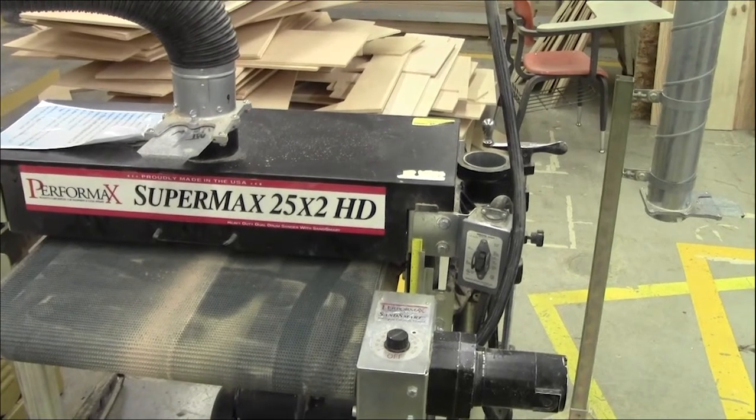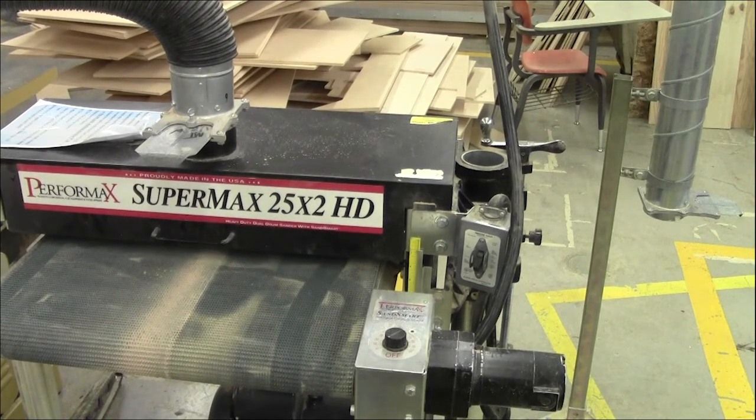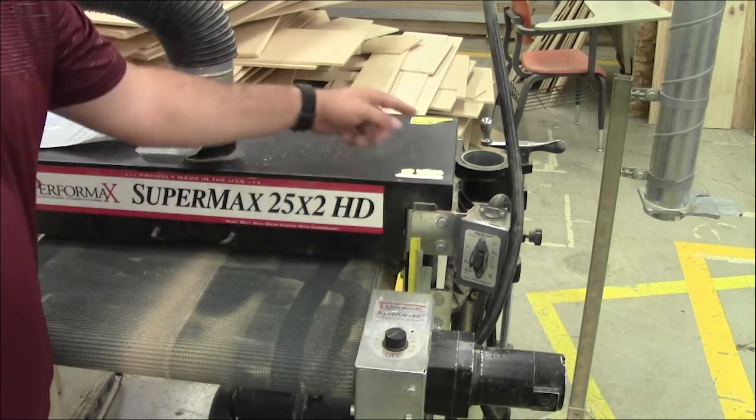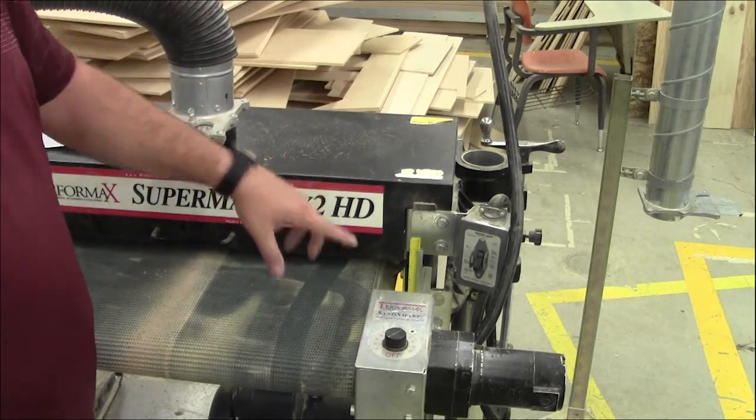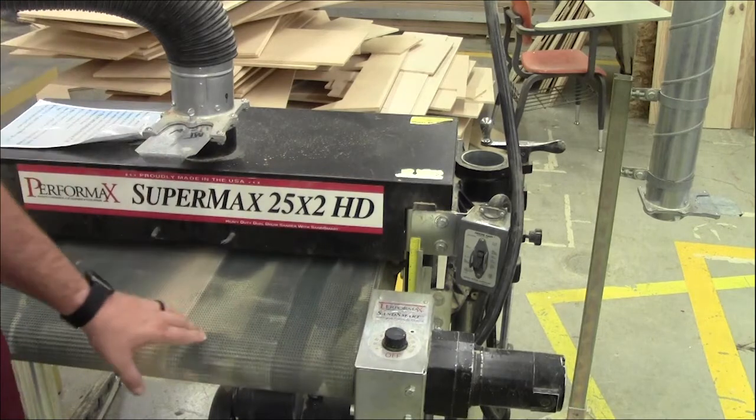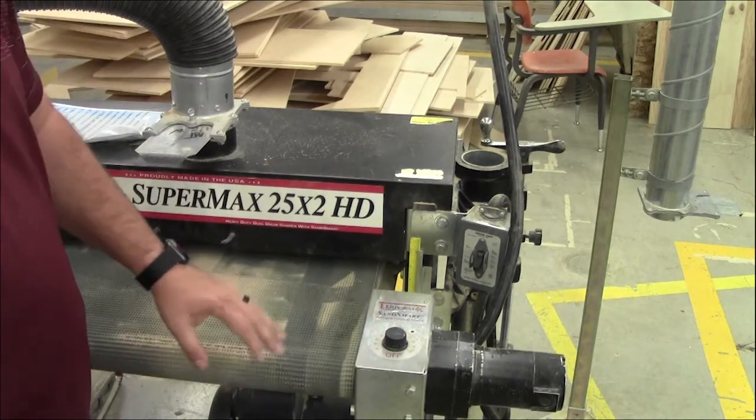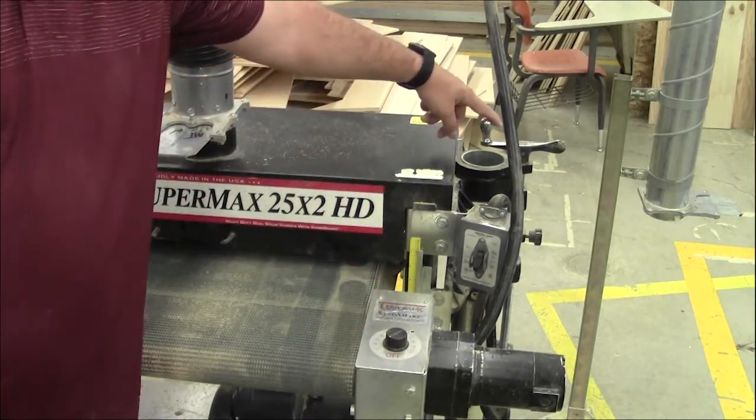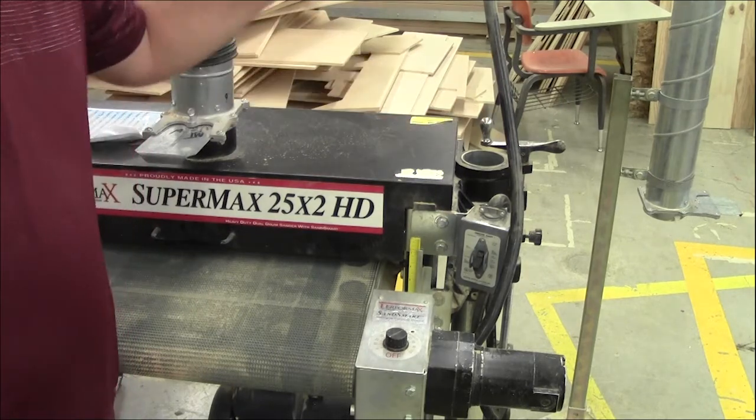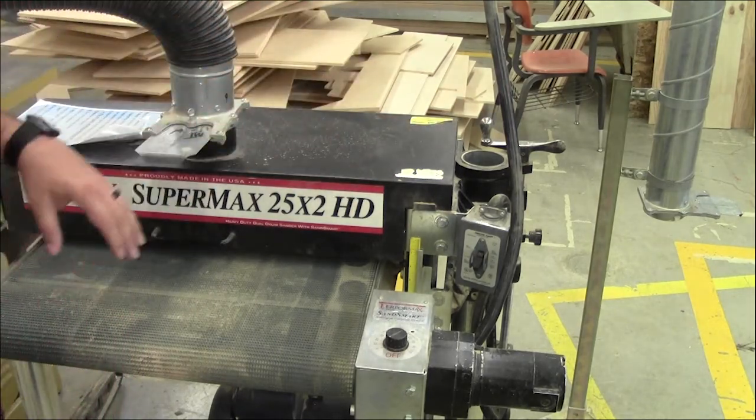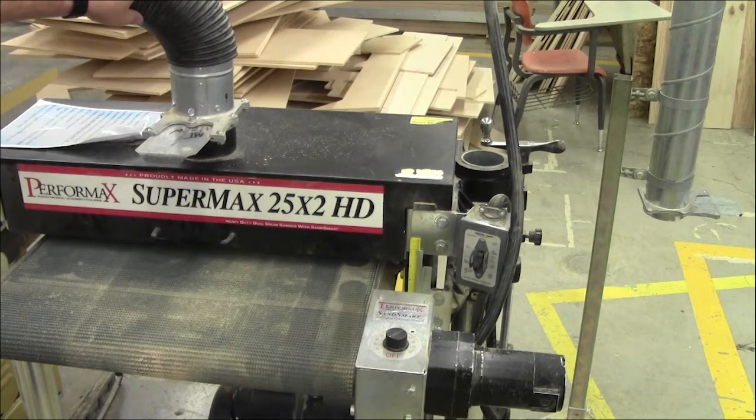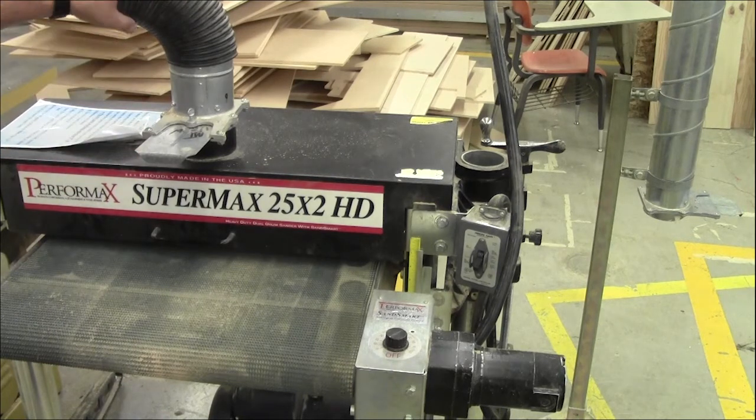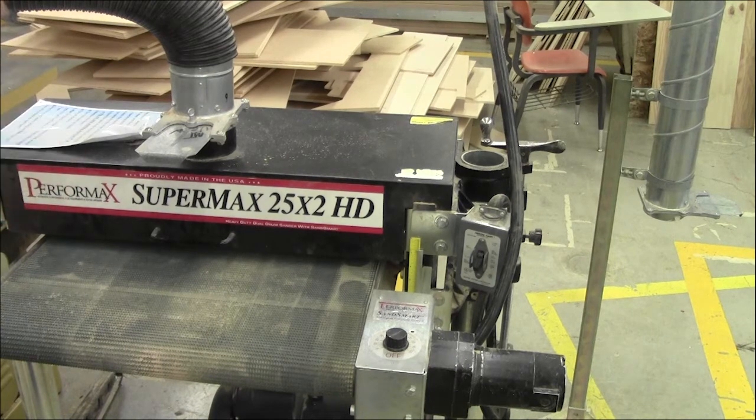There are four main parts of the drum sander that are important. First off is the on and off switch right here to get the drums spinning. You have a conveyor belt which pushes the wood through. You want to keep this as clean as possible so it can have grip. Then you have this arm here that you twist to rotate and move it up or down depending on the thickness of your wood. Another thing that's really important is dust collection. Without it, there'll be a cloud of dust all around this machine. All these fine particles from sanding should go into the vacuum.